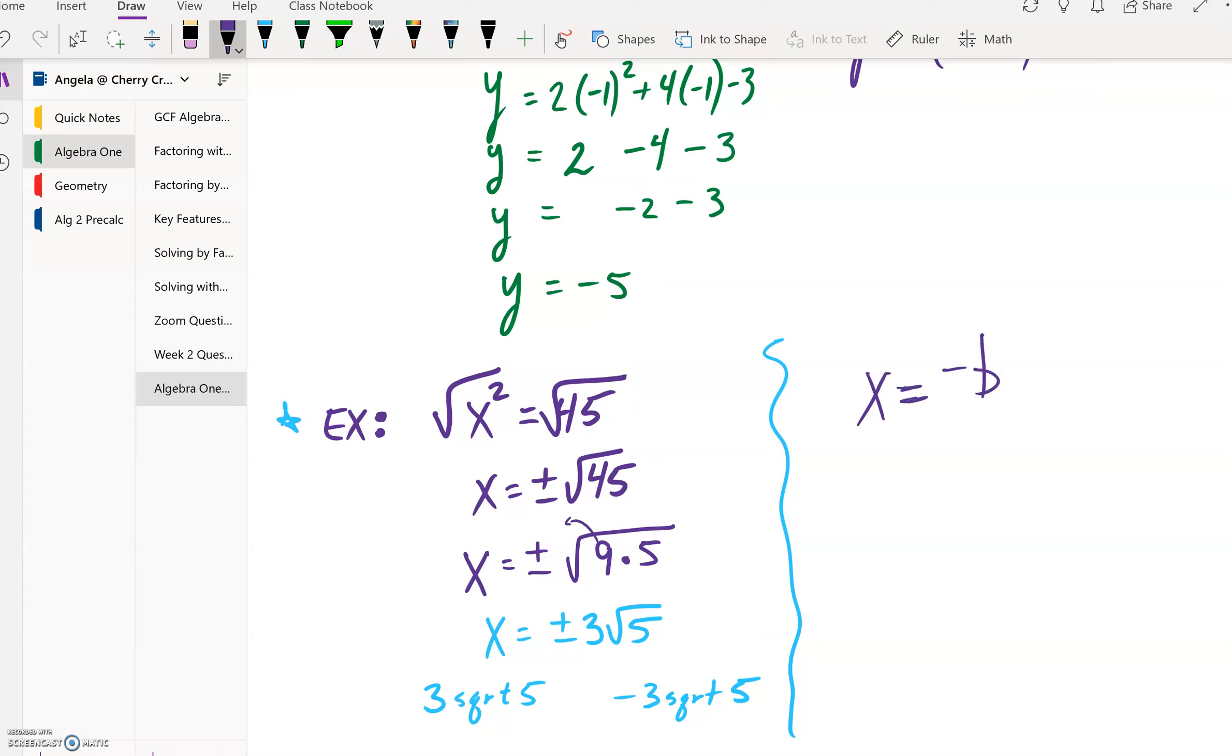The opposite of b plus and minus the square root of b squared minus 4ac all over 2a. And you can watch the next video in the lineup for some examples of how to use that formula.